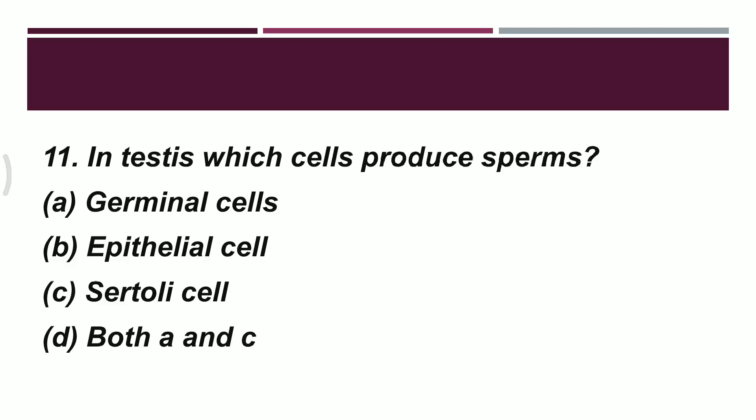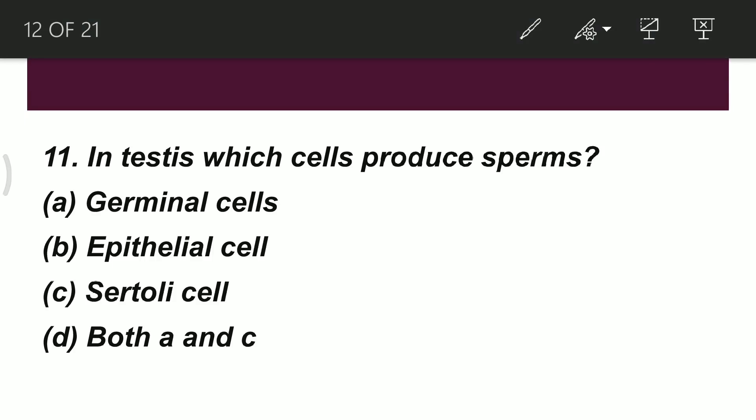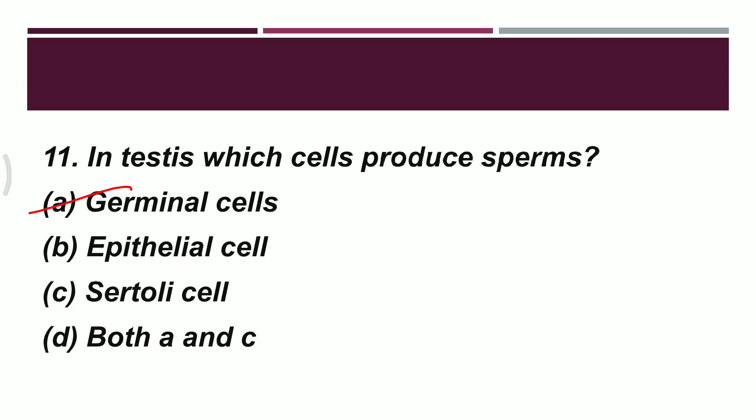Question 11: in the testes, which cell produces sperm? Option A: germinal cell. Option B: epithelial cell. Option C: Sertoli cell. Option D: both A and C. The correct option is A — germinal cells (male germ cells) are responsible for producing sperm. Once sperm is formed, another type of cell provides nutrition to keep it alive.